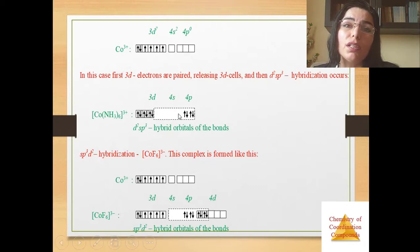And the SP3D2 hybridization, this complex is formed like this. And SP3D2 hybrid orbitals of the bonds, you see here in this example.